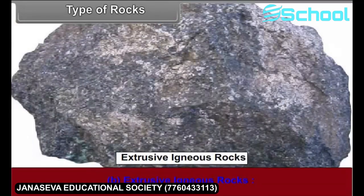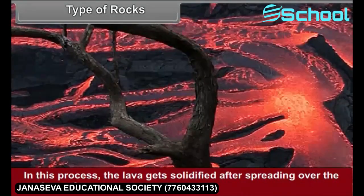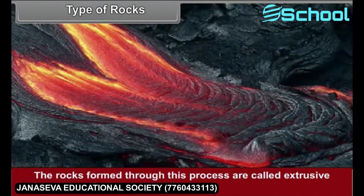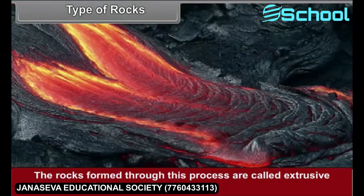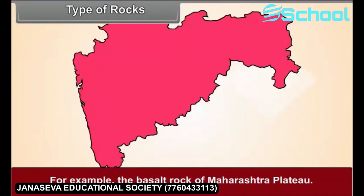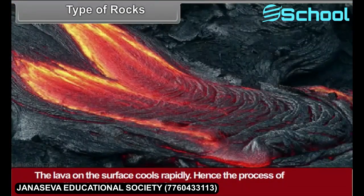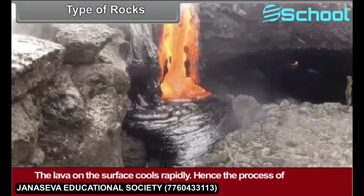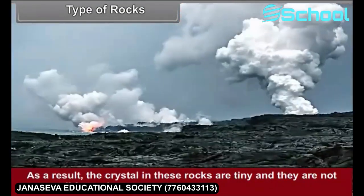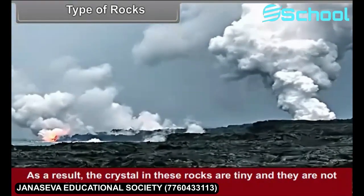Extrusive igneous rocks: In this process, the lava gets solidified after spreading over the Earth's surface. The rocks formed through this process are called extrusive igneous rocks — for example, the basalt rock of the Maharashtra Plateau. The lava on the surface cools rapidly, hence the process of crystallization is also quite fast. As a result, the crystals in these rocks are tiny and not very well formed.